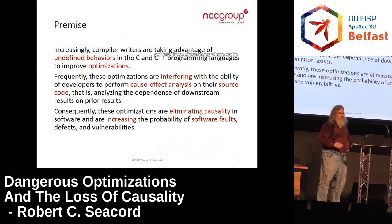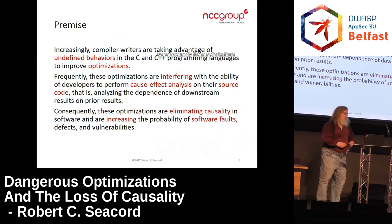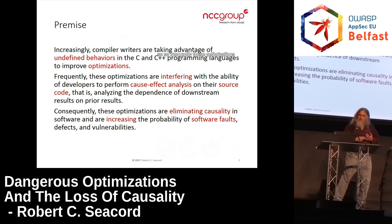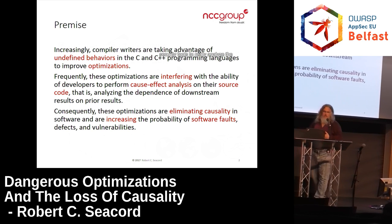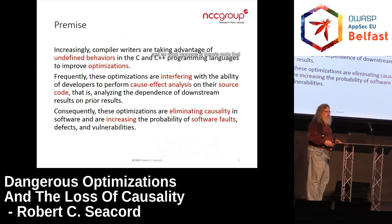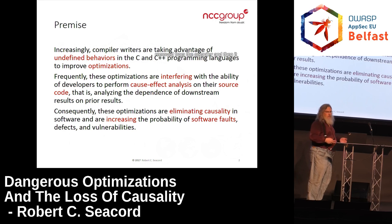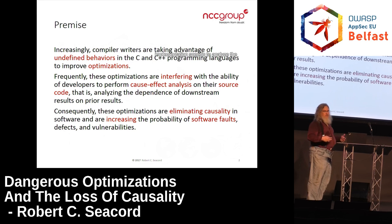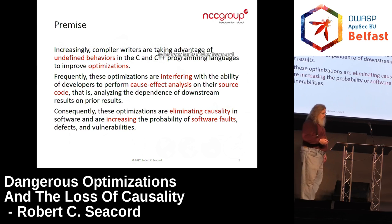I frequently get into discussions where we're saying, if six turns out to be nine, do you care how fast you got that result? And apparently, they do. These optimizations tend to interfere with the ability of developers, security analysts, or security tools to really analyze the code and determine what it's doing. There's code that looks like it's there, looks like it's doing something, but it's actually being removed by the compiler. This is leading to increased faults in software, and those are leading to increased vulnerabilities.